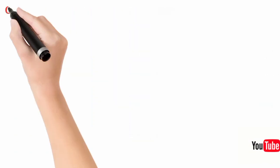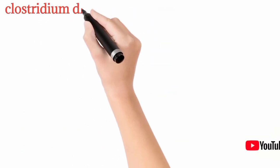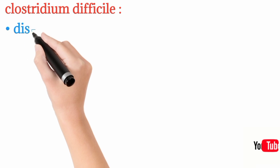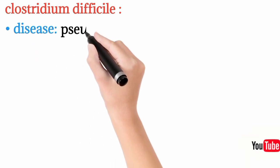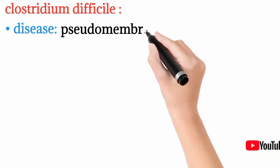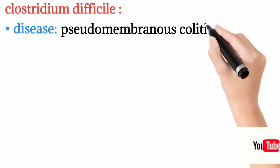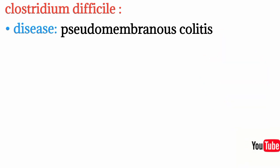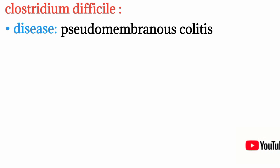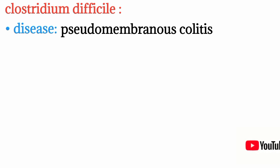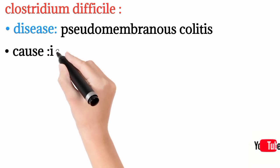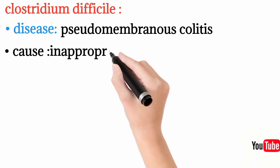Clostridium difficile causes pseudomembranous colitis, forming a pseudomembrane in the colon. It is usually caused by inappropriate or excessive use of antibiotics, which suppress the normal flora of the gut.